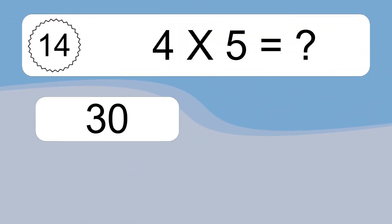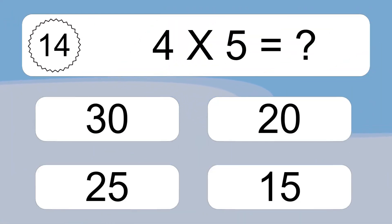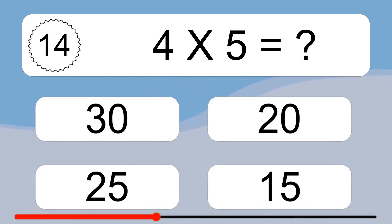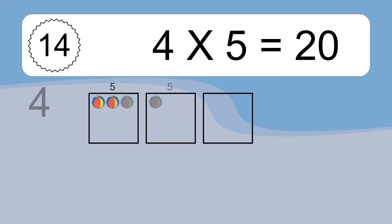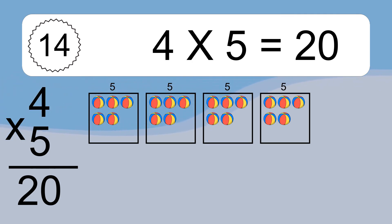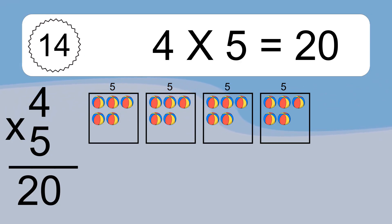4 times 5 equals what? 4 times 5 equals 20. We have 4 boxes, and each box has 5 colorful balls inside. If you count all the balls in all the boxes together, you will have 4 times 5 balls. This equals 20 balls.